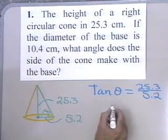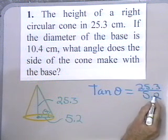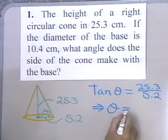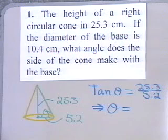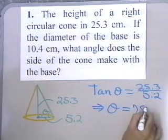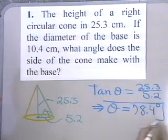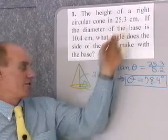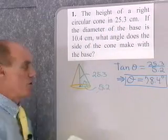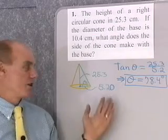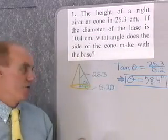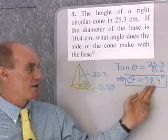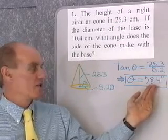The tangent of theta is equal to 25.3 divided by 5.2. On a calculator, I find the inverse tangent of 25.3 divided by 5.2, and I get theta equal to 78.4 degrees to the nearest tenth of a degree. I took it to the nearest tenth because both measurements have three significant digits — the diameter 10.4, giving radius 5.20, and height 25.3. So theta is 78.4 degrees.